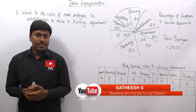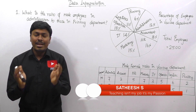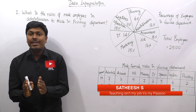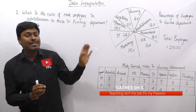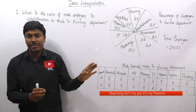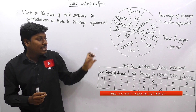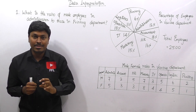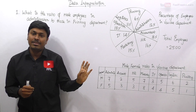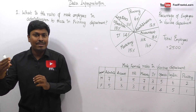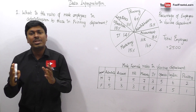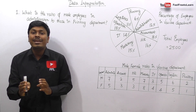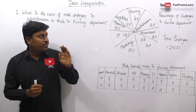Let me move on to the data interpretation question. Friends, if you are preparing for any competitive exam, placement exam, or otherwise, my advice is to start with this basic data interpretation question. This pie chart and table chart is a basic DI question. You need to know how to solve these types of questions first, then you can go for tougher and CAT-level questions to solve them more easily.